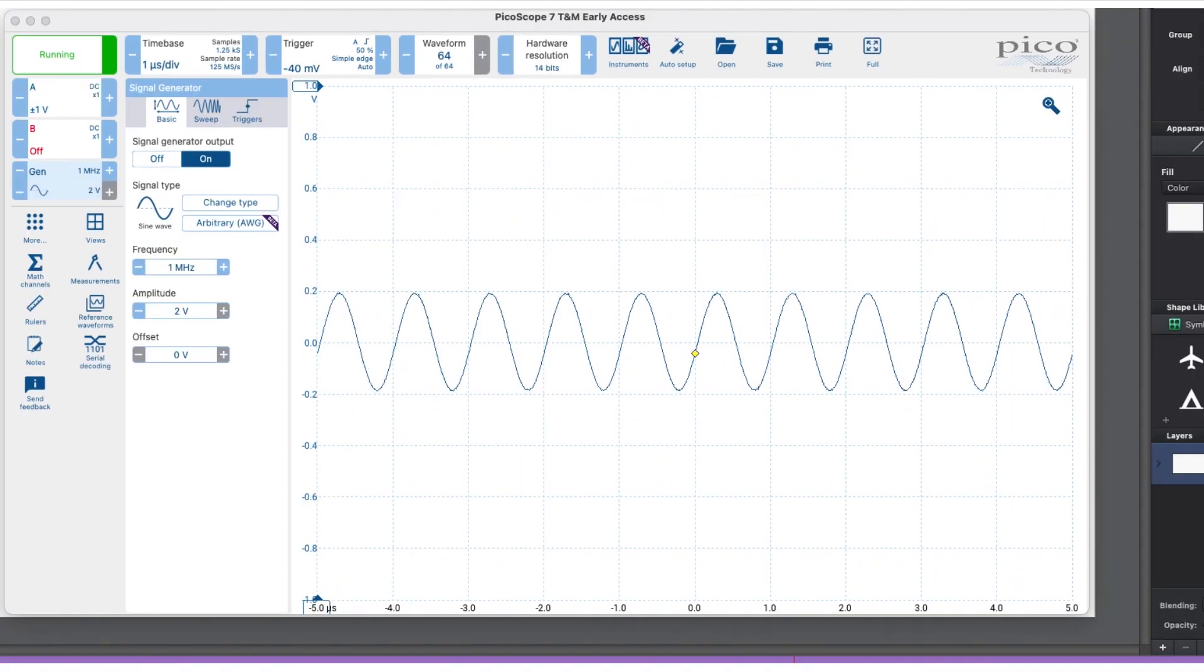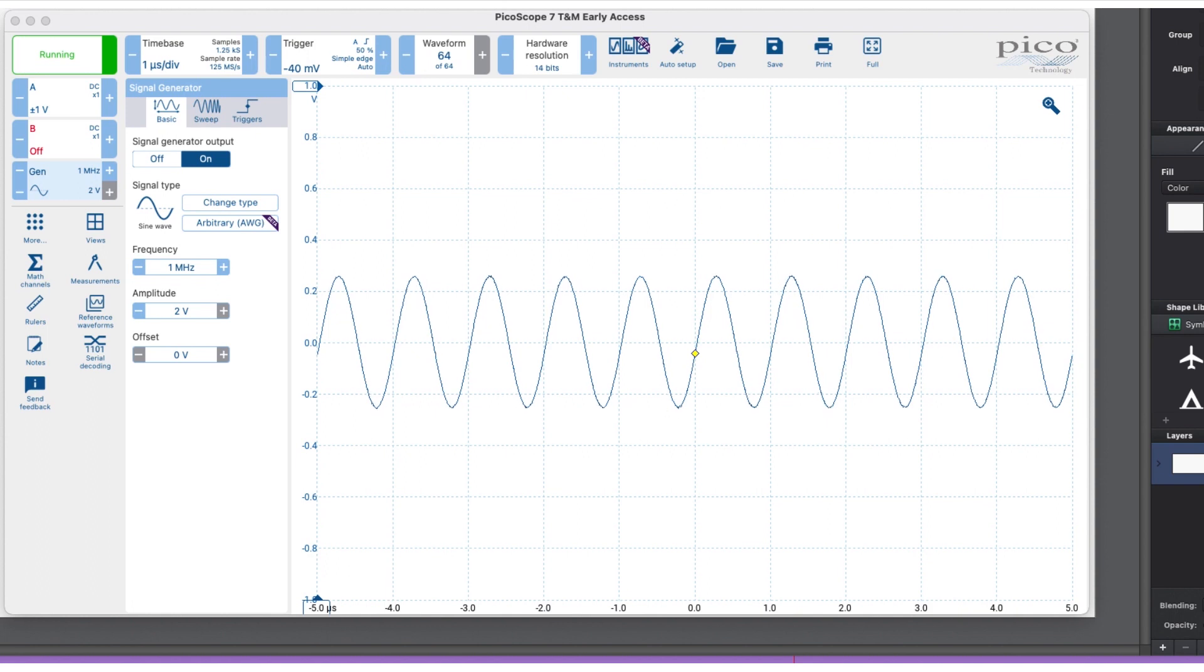It's very important to compensate the probe because it can make a real difference to readings, especially when higher frequency signals are being monitored. See how adjusting the compensation affects the readings for this one megahertz signal - it can make quite a difference.